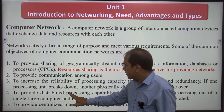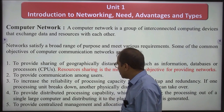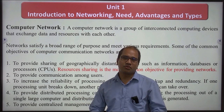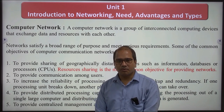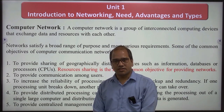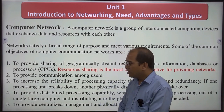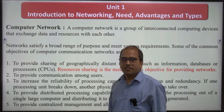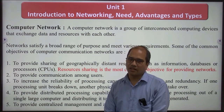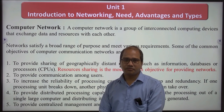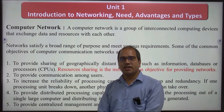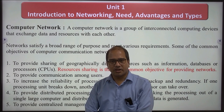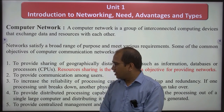Fourth है to provide distributed processing capacity। Parallel processing के लिए एक process को कई systems के थ्रू process कराते हैं, जिससे parallel processing successfully work करती है। Fifth है to provide centralized management — एक server के थ्रू किस person को कौन सी permission देनी है, किस computer को कौन सा resource allocate किया जाएगा, ये सारे काम networking के थ्रू कर सकते हैं।